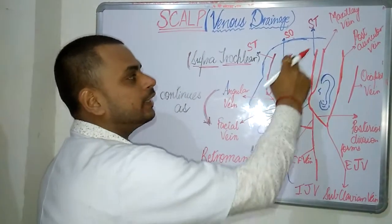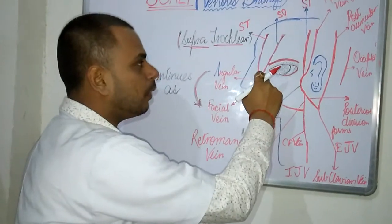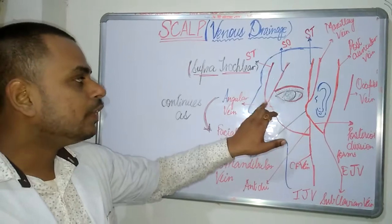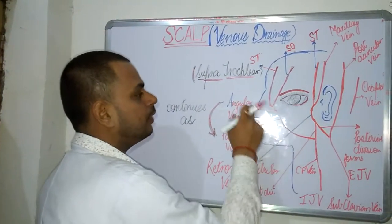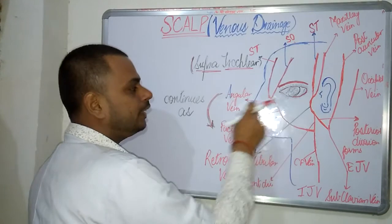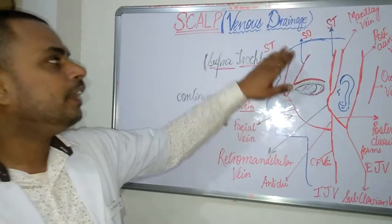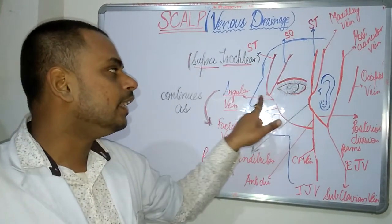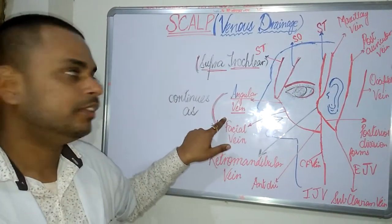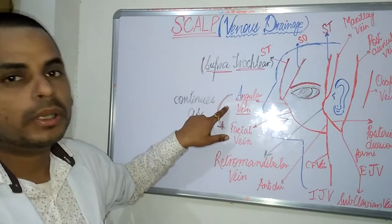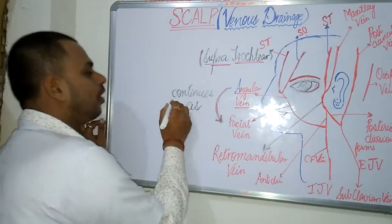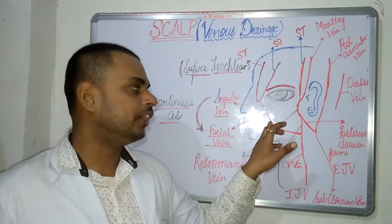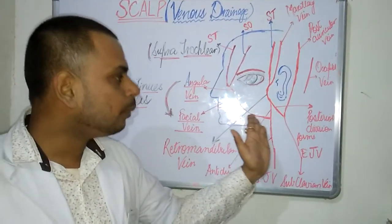The supratrochlear and the supraorbital vein are going to join and form the angular vein. So the supratrochlear and the supraorbital vein join to form the angular vein. Now this angular vein continues as the facial vein.